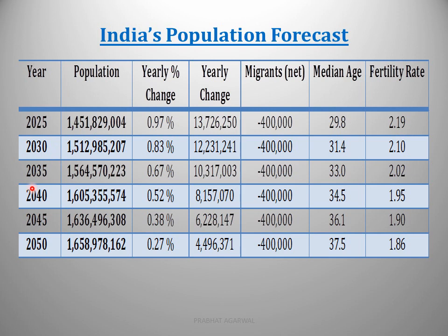Looking at 2030, 2035, 2040, 2045, 2050: by 2050 our population will be more than 165 crore people, but the good thing is the yearly change in percentage will be very low at 0.27%. As literacy rate increases, population growth will definitely slow down. The yearly increase in numbers expected at 1 crore 37 lakhs in 2025 will drop considerably to about 44 lakhs by 2050.